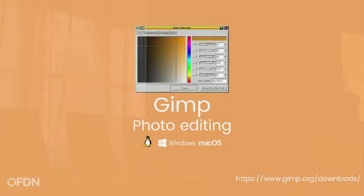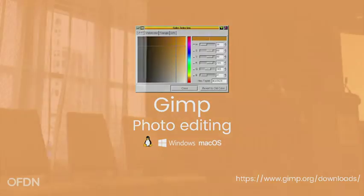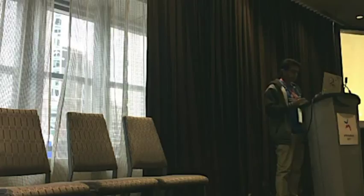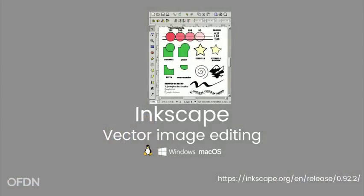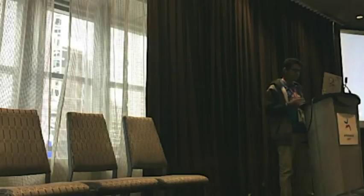GIMP is a great tool for photo editing and it's as good as Photoshop. It's available on all platforms. Inkscape is great for vector image editing, so if you're creating a vector image of anything for Wikipedia, this is a great tool.